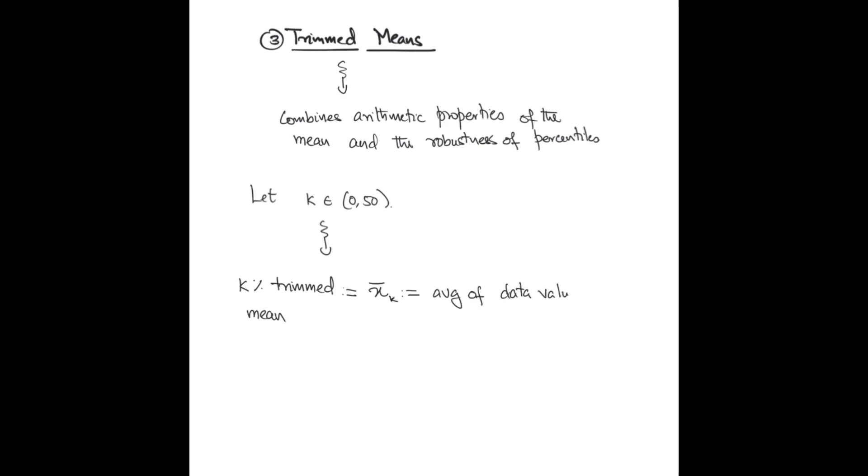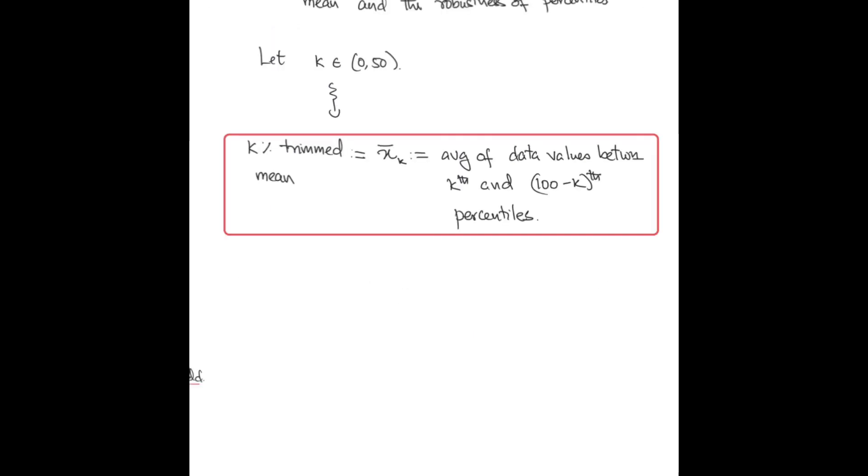To take care of this problem, the idea of trimmed mean comes into play, where we combine the benefits of the mean with the robustness of the percentiles. For any number k between 0 and 50, the k percent trimmed mean is exactly the average of the data values between the kth percentile and the 100 minus kth percentile. Note that the sample mean is exactly attained when k equals 0, whereas the sample median is attained when k equals 50. Depending on the value of k, we can choose how much of the outlying data we'd like to ignore when calculating our trimmed mean.